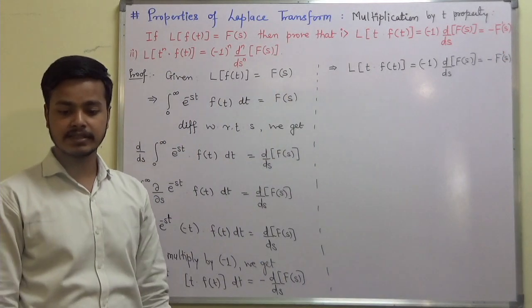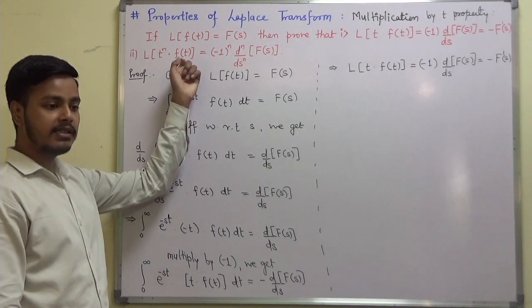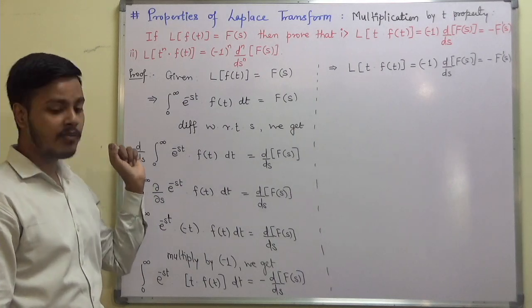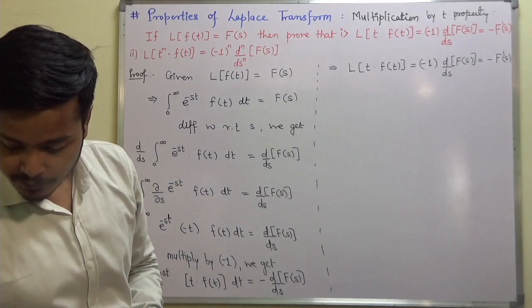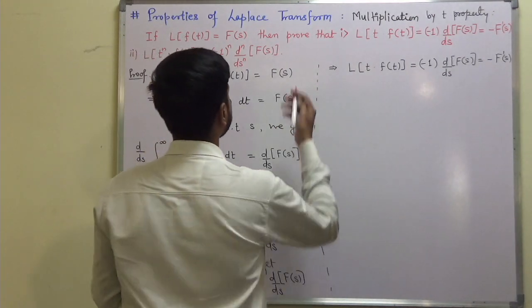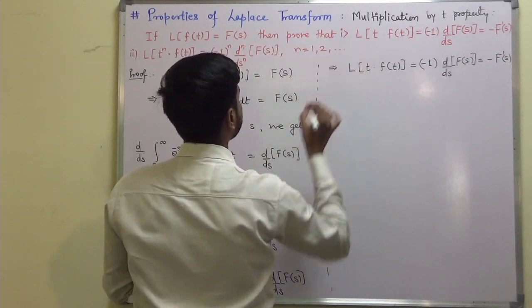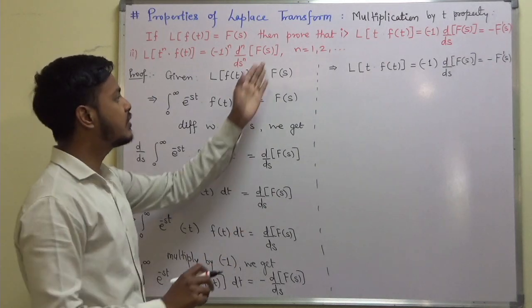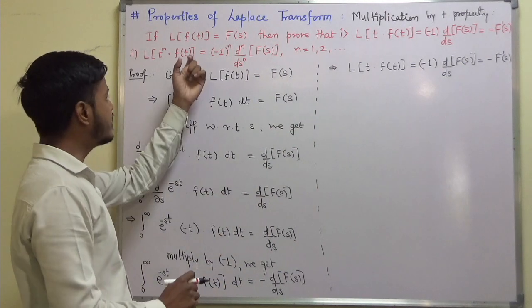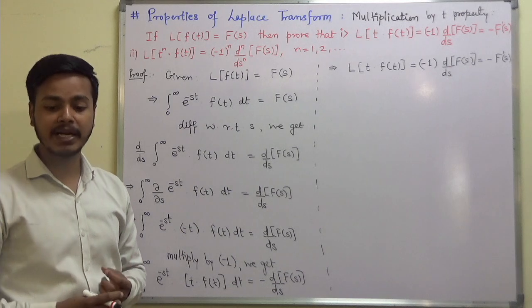Now for the second result, we have to prove this for n = 1, 2, 3, and so on — all positive integers. The result for n=1 has already been proved. To prove the general result we are going to use the principle of mathematical induction.